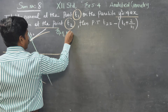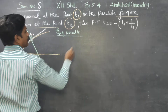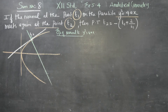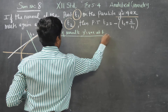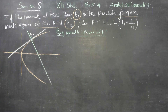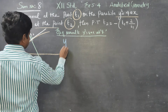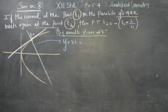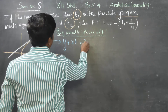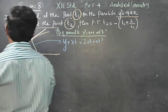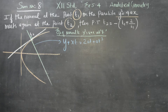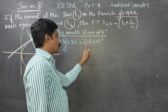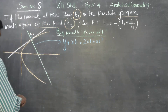The equation of normal to the parabola Y² = 4ax in parametric form at point T is: Y + xT = 2aT + aT³. This is the formula for the equation of normal in parametric form at T.